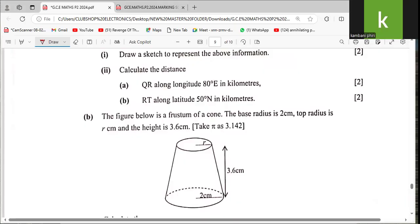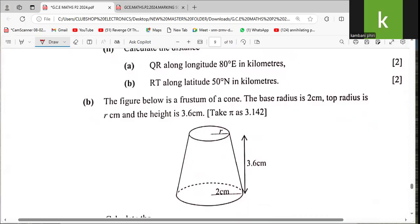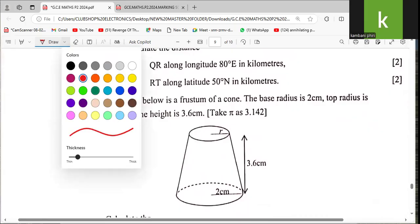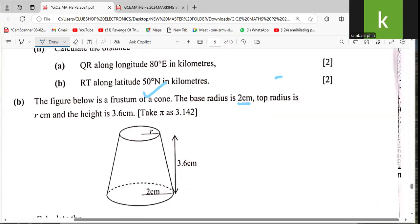The figure below is a frustum of a cone. The base radius is 2cm, top radius is r cm, and the height is 3.6cm. Take π as 3.142.